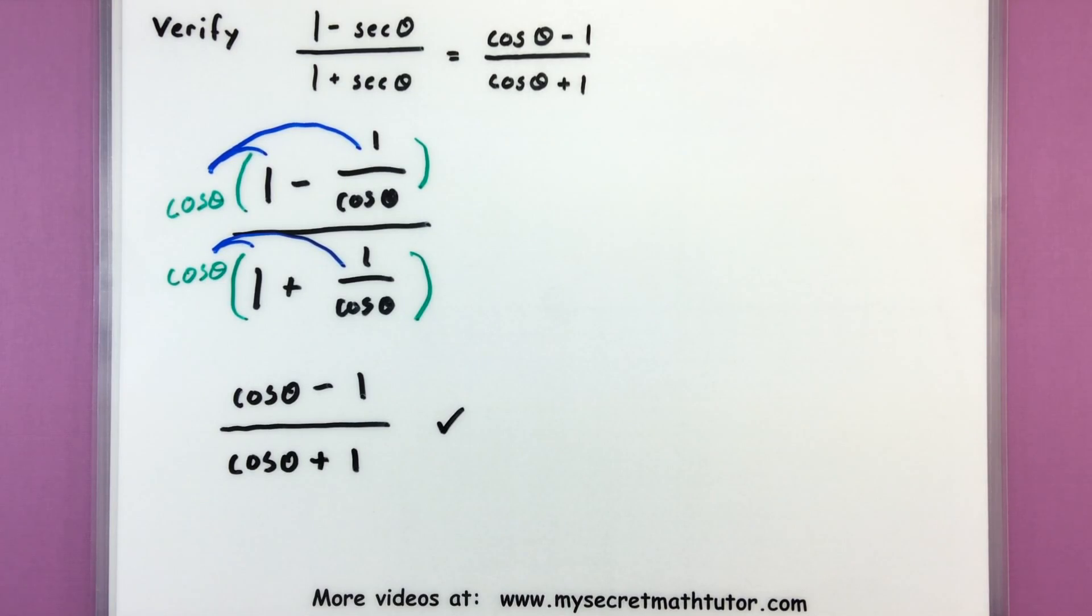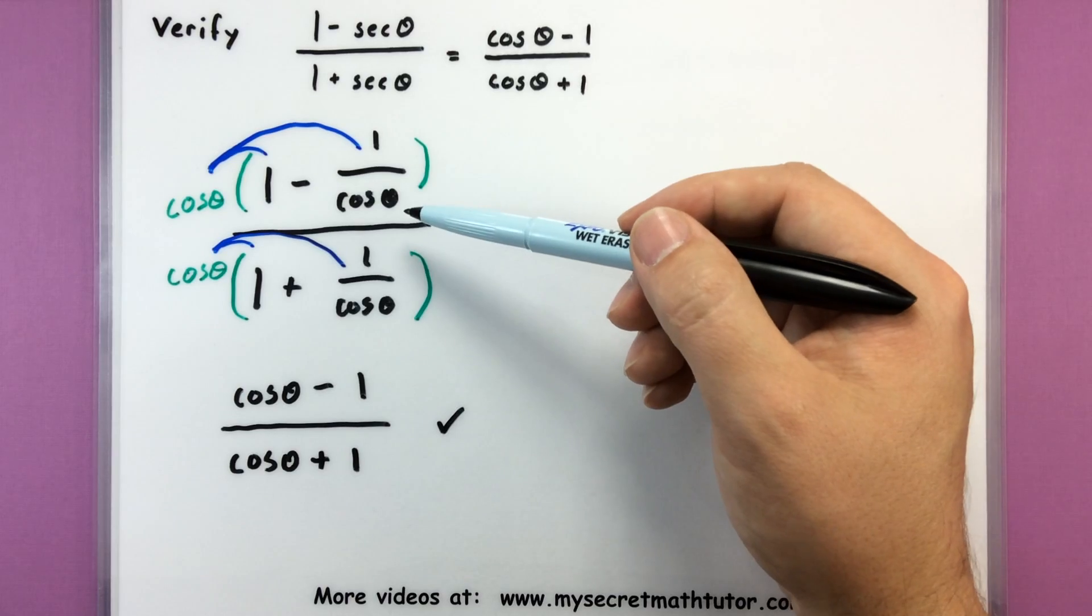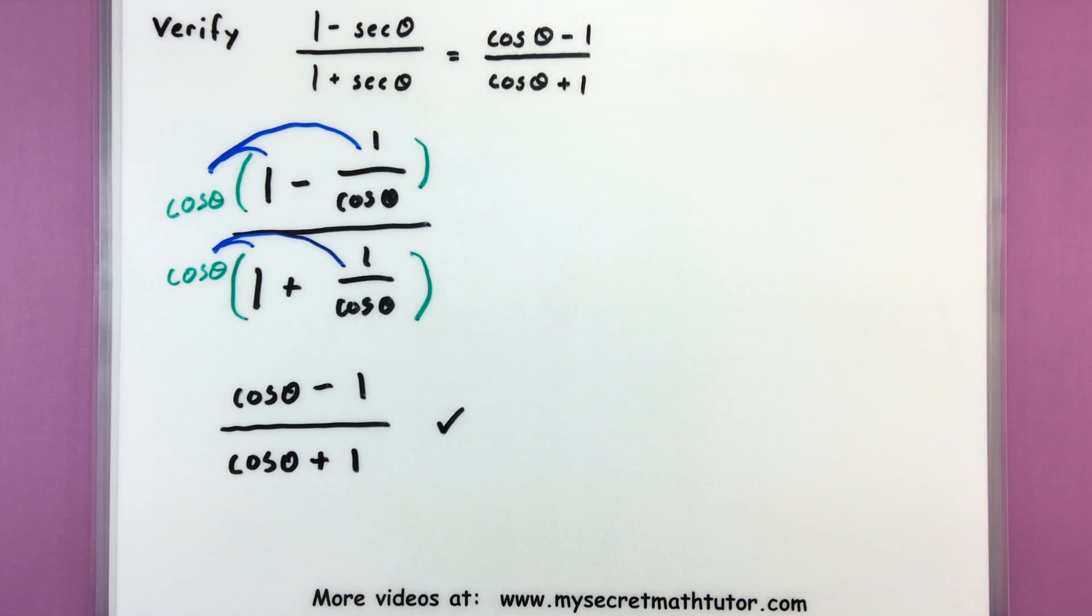And sure enough that's exactly what we wanted for the right side. So we're in good shape. We've verified this identity. And this one actually didn't involve a whole lot other than just writing it in terms of cosine and manipulating it, multiplying it on the top and bottom by cosine.